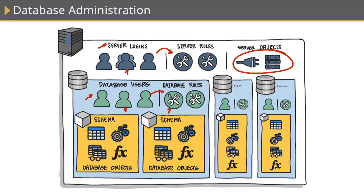We assign permissions to all of these things against database objects like tables, views, stored procedures, and functions. Usually we assign them DML, DDL, and DCL permissions — for example, giving them the ability to SELECT, INSERT, UPDATE, or DELETE against tables, or CREATE, ALTER, DROP against stored procedures.